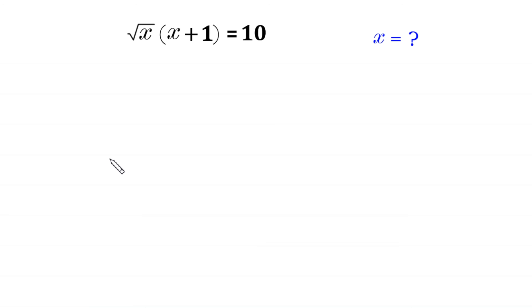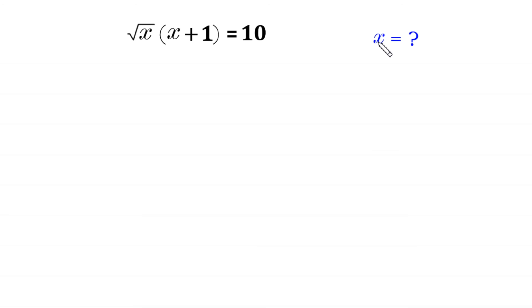Hello, welcome to how to solve this very nice algebra equation. Square root of x times x plus 1 is equal to 10. We need to find all possible values of x.